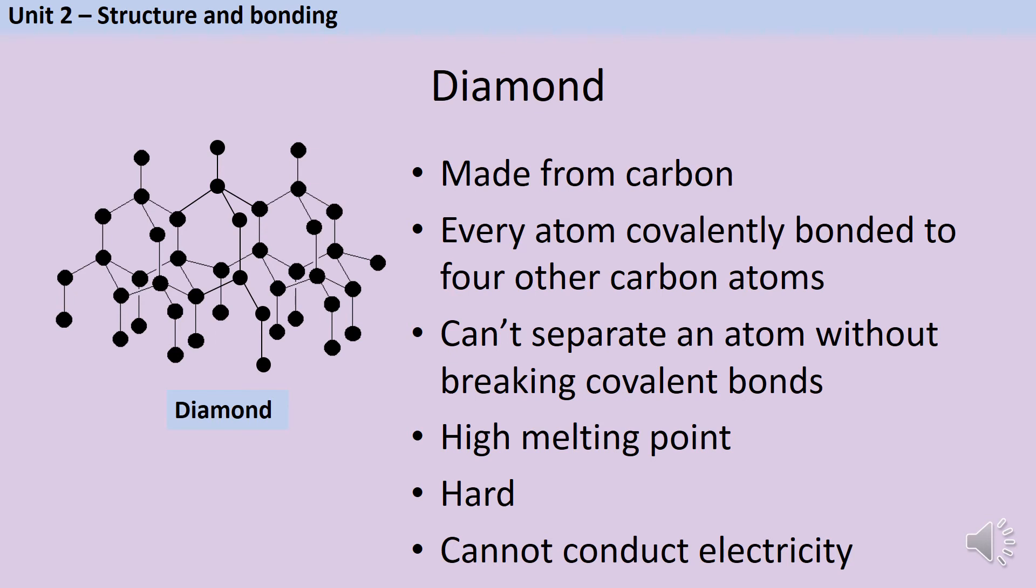It's not like the small molecular substances where there are individual molecules that can be broken apart, the whole of the diamond is one big molecule. This means it has a very high melting point because in order to melt it you have to break those very strong covalent bonds.